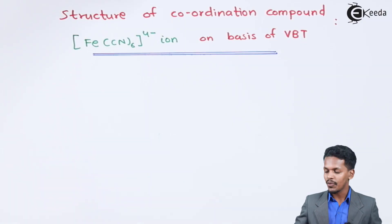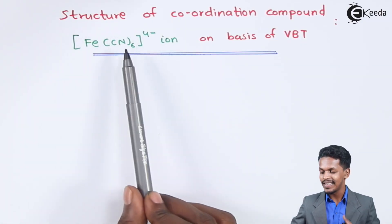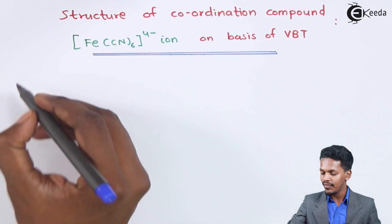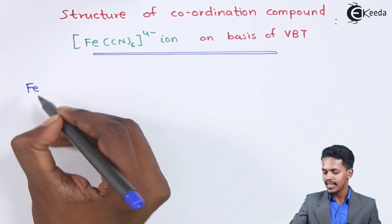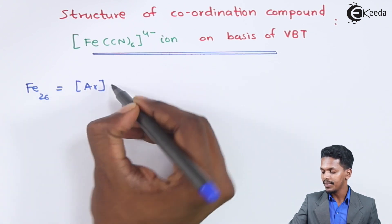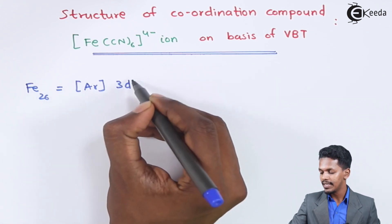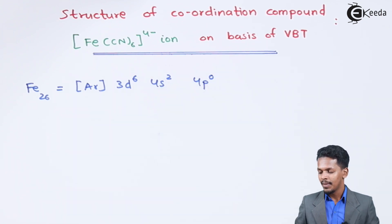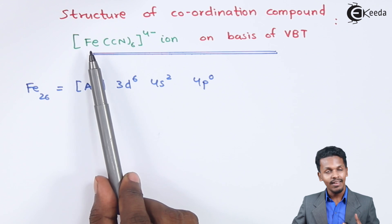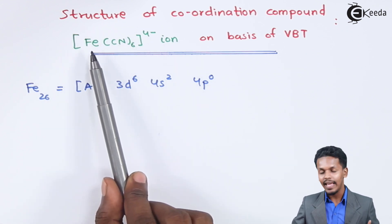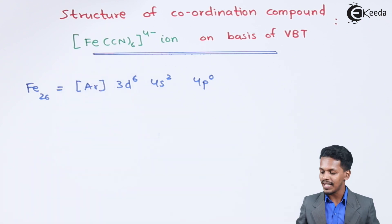We are going to talk about the structure of the hexacyano iron complex. Let us understand the electronic configuration of Fe, which is atomic number 26. We can write it as argon 18, 3d6, 4s2, 4p0. In this complex, the oxidation number of Fe is 2+.